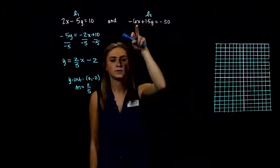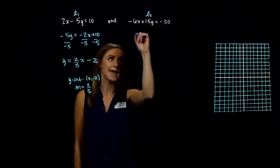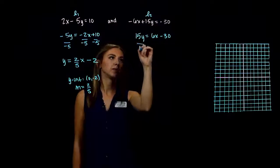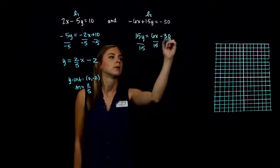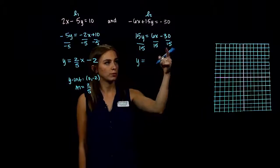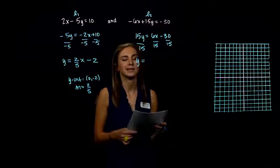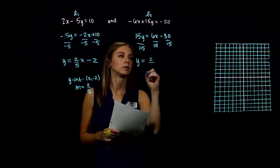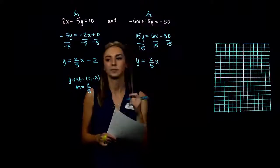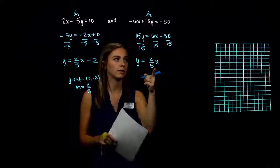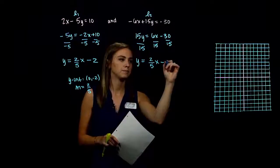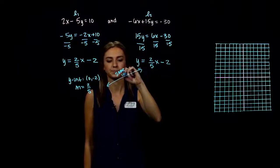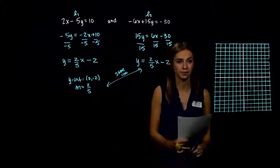For line 2, add 6x to both sides then divide by 15. Reducing the fraction: 6 and 15 share a factor of 3, giving 2 over 5 for the slope. The constant: negative 30 divided by 15 equals negative 2. So y equals two-fifths x minus 2 — the same as line 1.